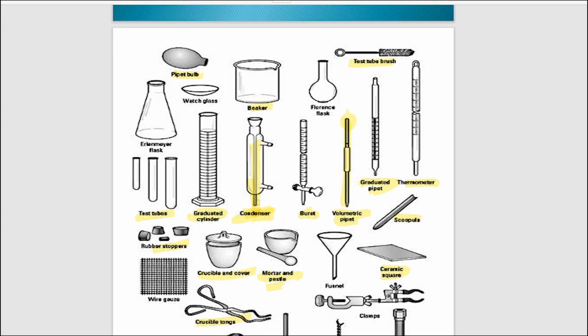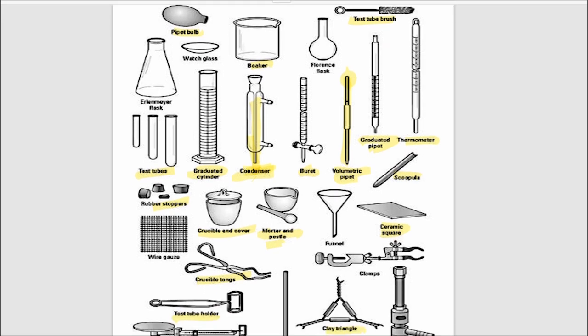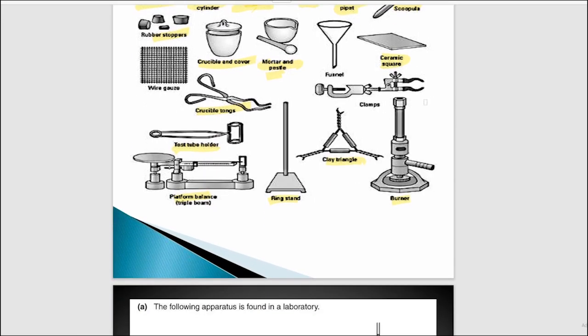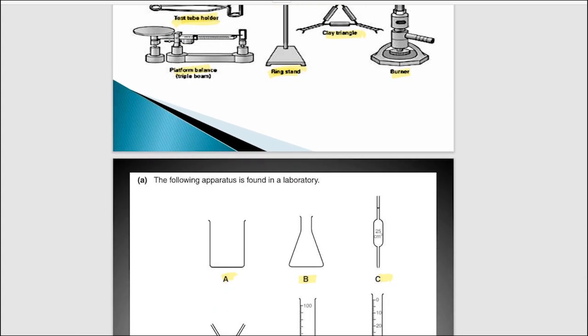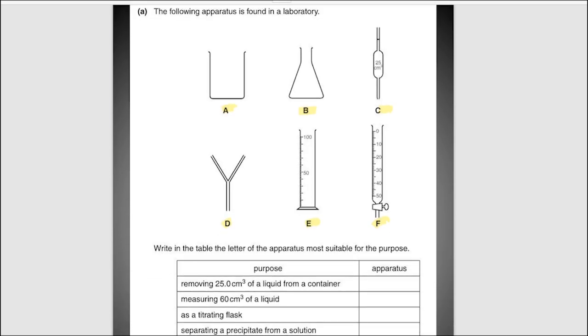This one is the round bottom flask, next one is the ceramic square, here is the clamp, burner, this one is the ring stand again, this one is the balance and test tube holder. Here is the question given in the exam.